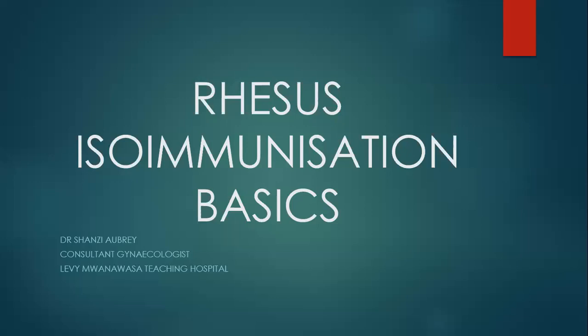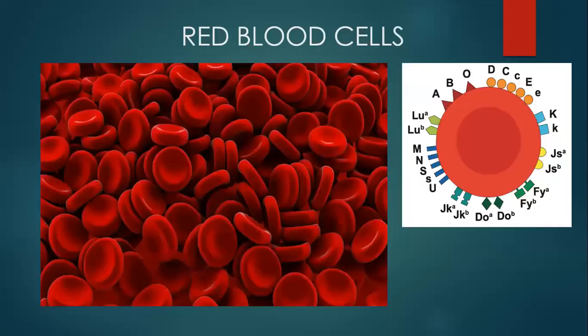We'll go through this presentation quickly. Rhesus isoimmunization can be quite a technical topic, but we'll try and go through it quickly. So this is just the basics. Red blood cells look very innocent when you look at them, but they are not as innocent as they look — they have all these antigens on their surface.